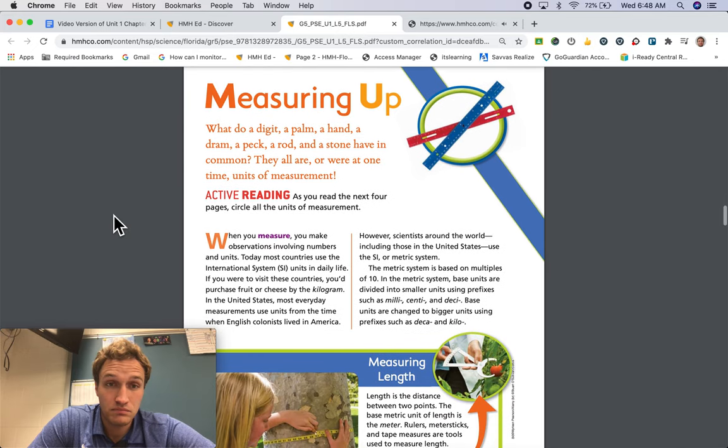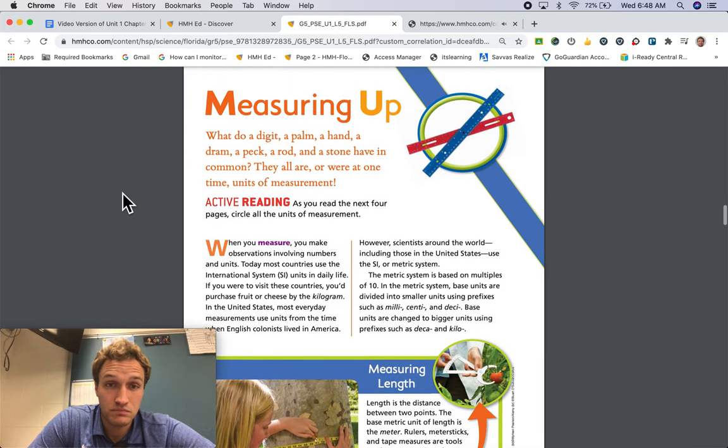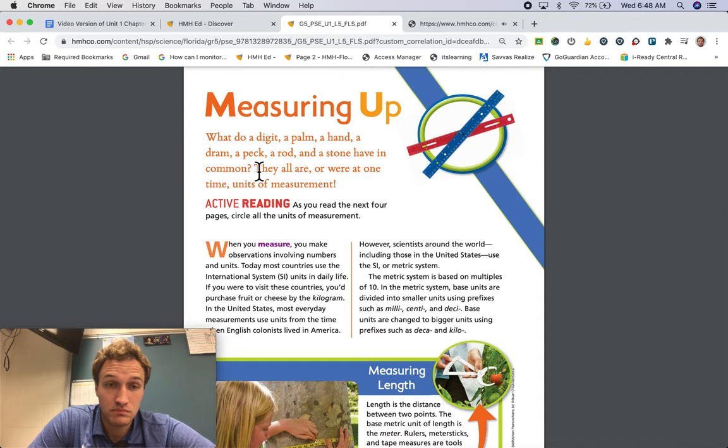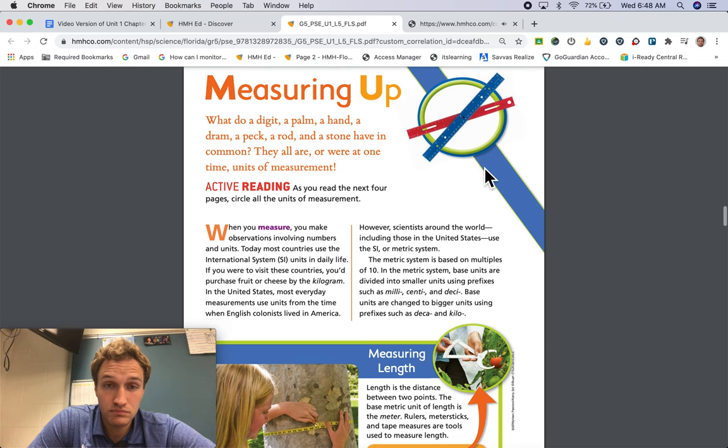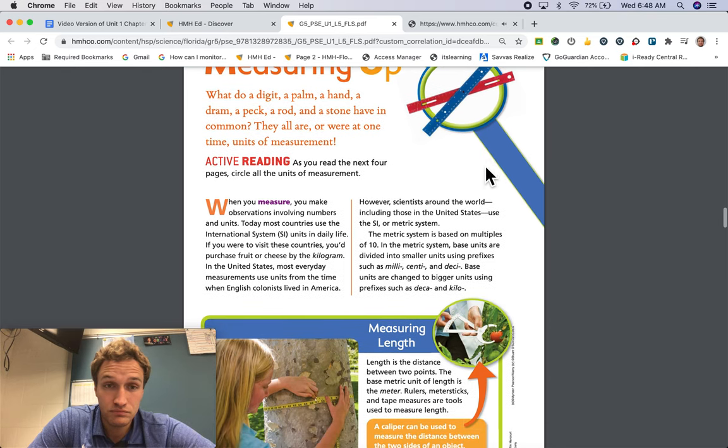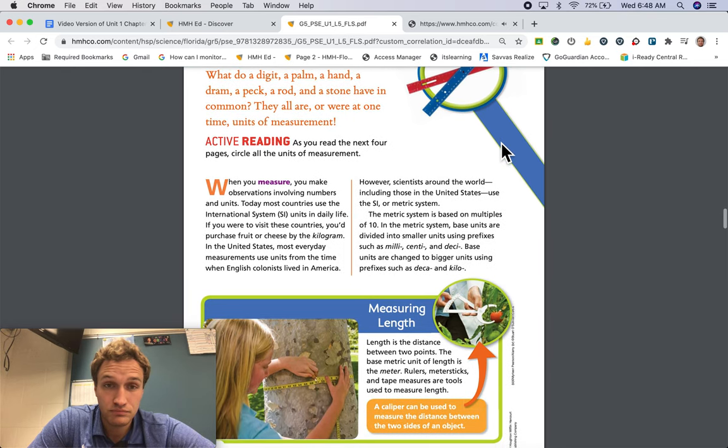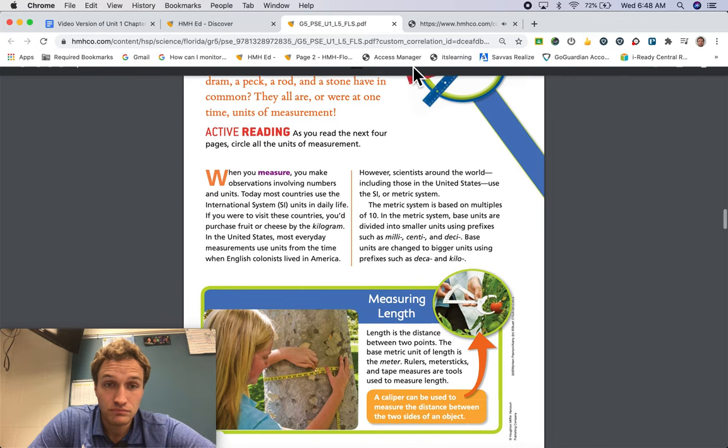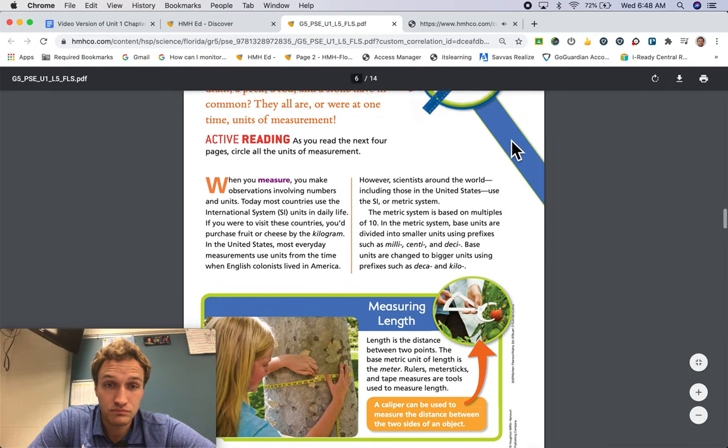Measuring up. What do a digit, a palm, a hand, a dram, a peck, a rod, and a stone have in common? They all are or were at one time units of measurement. Active reading. As you read the next four pages, circle all the units of measurement.